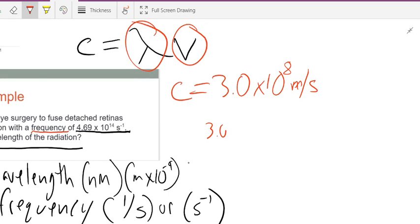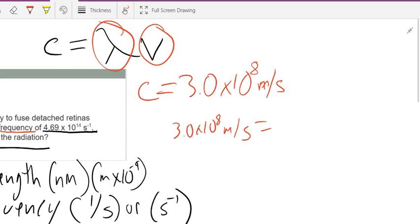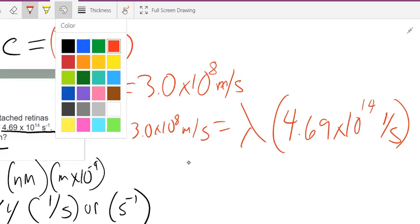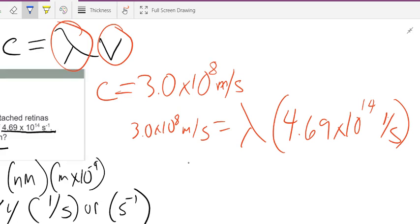3.0 times 10 to the eighth meters per second is equal to lambda times 4.69 times 10 to the 14th, 1 over seconds. Now, to the 14th, that's what we're given here. Yes, let me make that as clear as possible. Now, we're given 1 over seconds because it's seconds to the negative 1, and seconds to the negative 1 is equal to 1 over seconds.